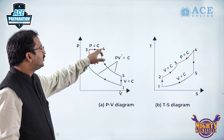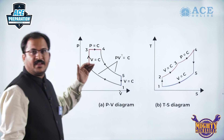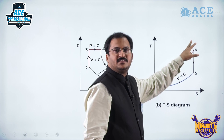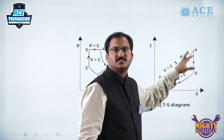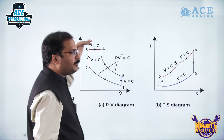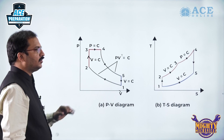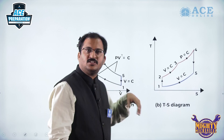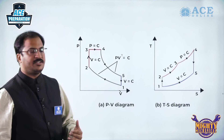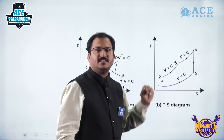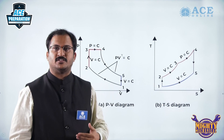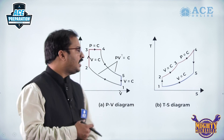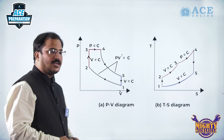Process 3 to 4 is constant pressure heat addition. As a result, the maximum temperature T4 is attained during this process, and the maximum pressure of the cycle is P3 = P4. Then process 4 to 5 is isentropic expansion — volume increases and pressure and temperature decrease. Process 5 to 1 is constant volume heat rejection.